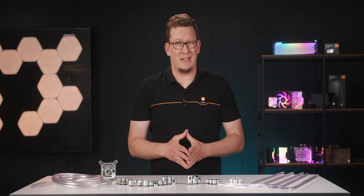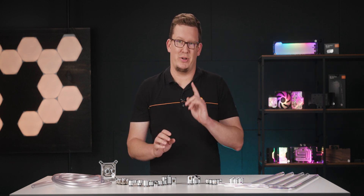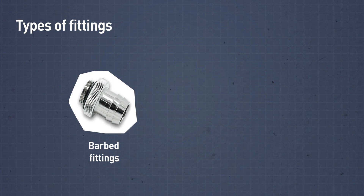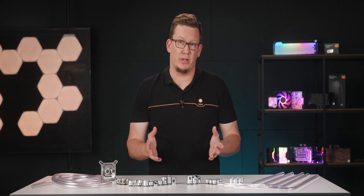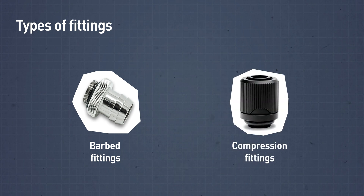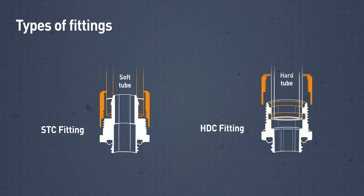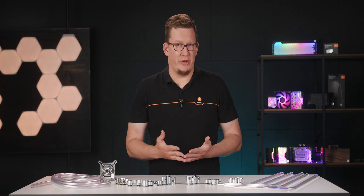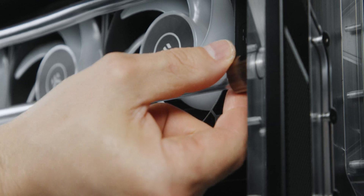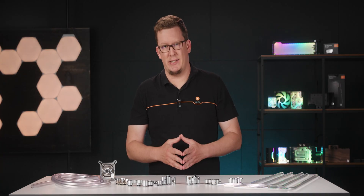Please note that the dimensions of the tubing and fittings that you are using should always match precisely. Although old school barb fittings are still used where aesthetics are not important, the market today is dominated by compression fittings. They are split into two main categories: soft tubing compression fittings and hard tubing compression fittings. They are called compression fittings because their locking ring compresses the tube or the O-ring in hard tubing versions, creating an airtight seal.